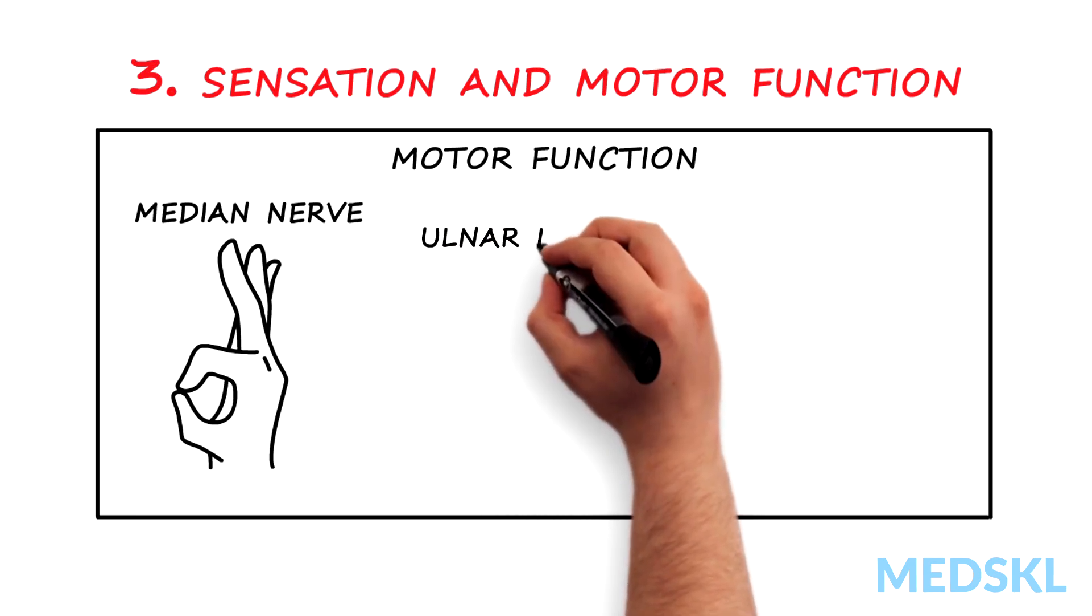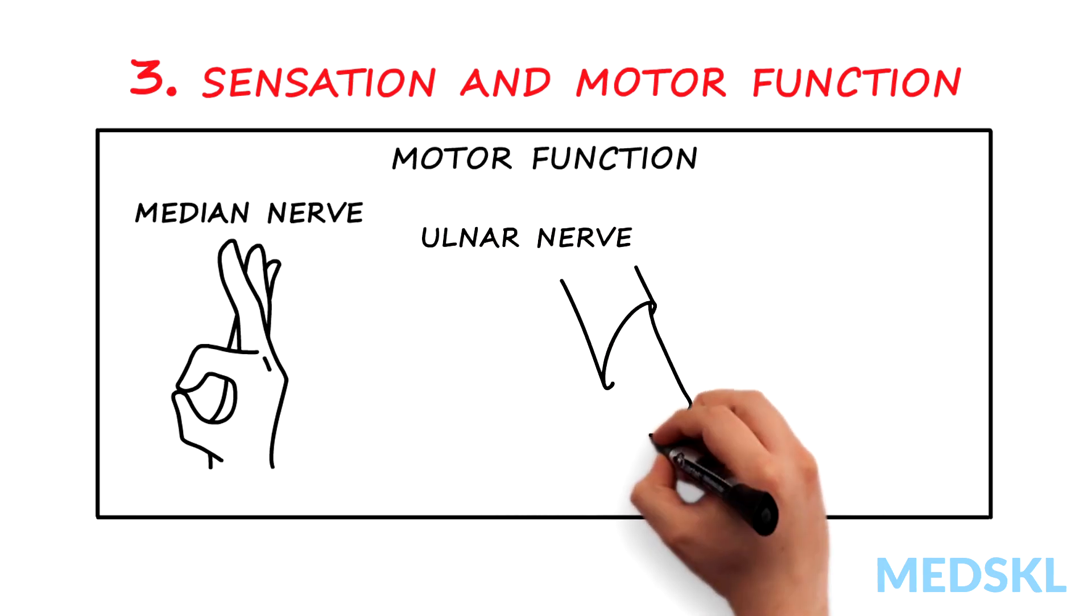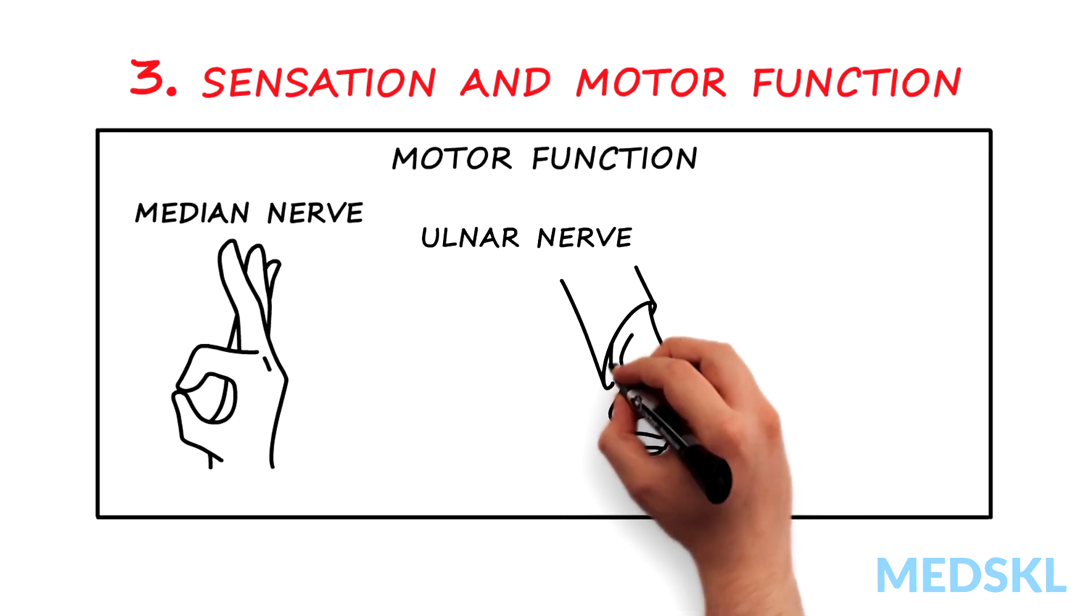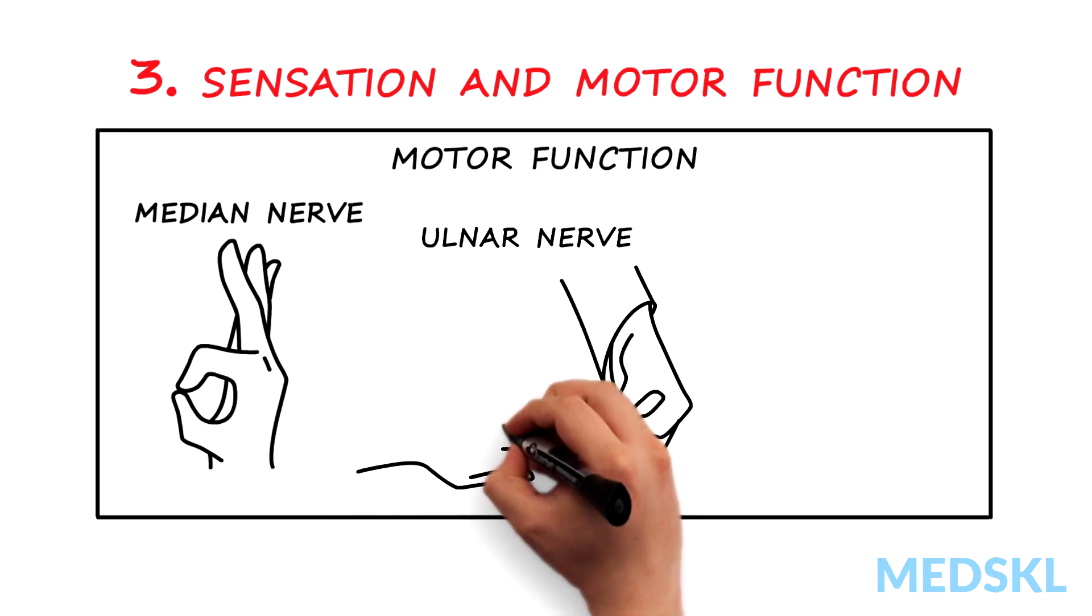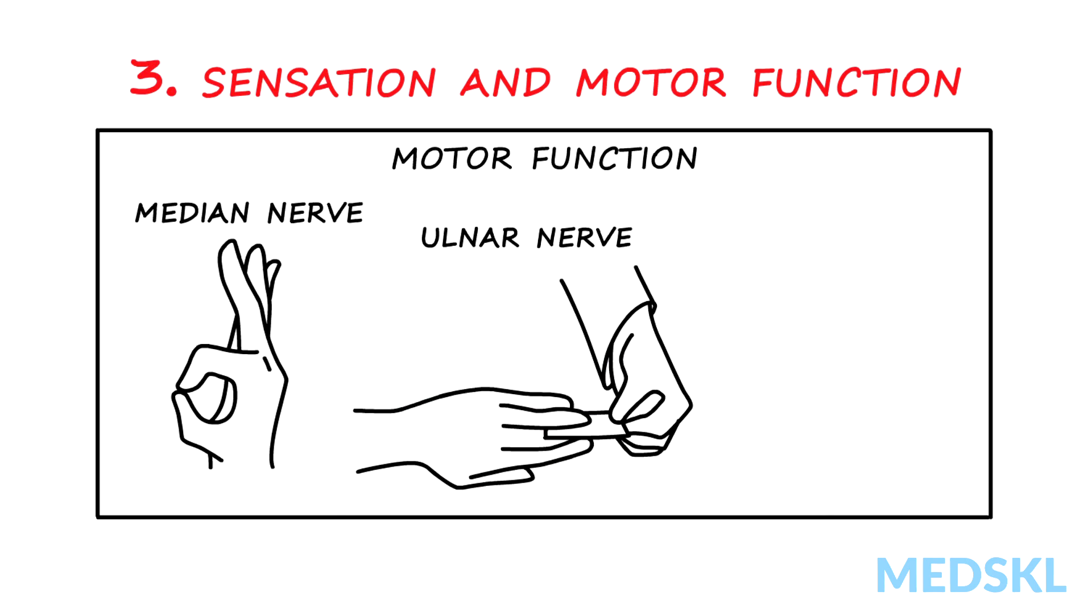Second, the ulnar nerve, looking at intrinsic muscle function. Test by asking the patient to hold a piece of paper between adducted fingers as you try to pull it away.